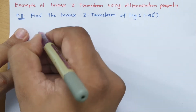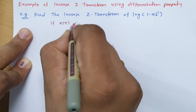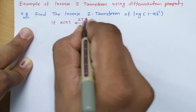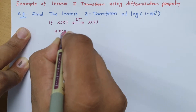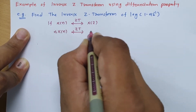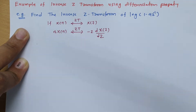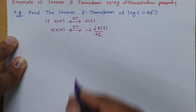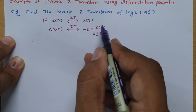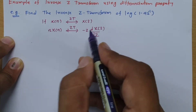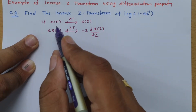So what is the differentiation property? If you have signal x(n) and its z-transform is X(z), then the z-transform of n·x(n) is equal to -z · dX(z)/dz.